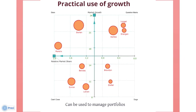For each product or service, the area of the circle represents the value of its sales. The growth share matrix thus offers a map of the organization's product or service strengths and weaknesses, at least in terms of current profitability as well as the likely cash flows.